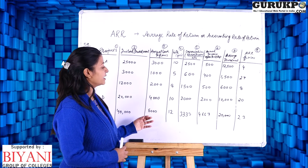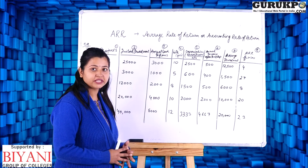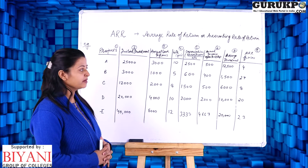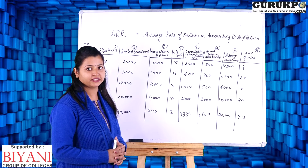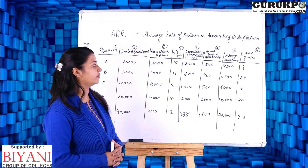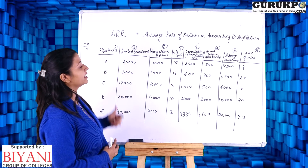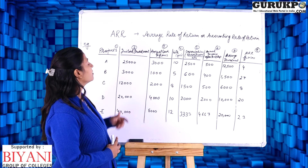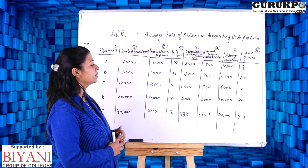For project E, 8,000 minus 3,333 comes to approximately 4,667. Now we calculate average investment, since our formula requires income after tax and depreciation divided by average investment into 100. As salvage value is not given, average investment is total investment divided by 2. For A: 25,000 divided by 2 = 12,500. For B: 3,000 divided by 2 = 1,500.